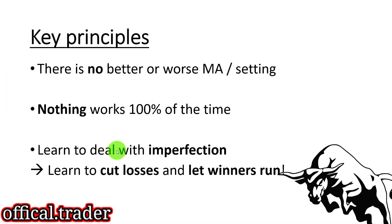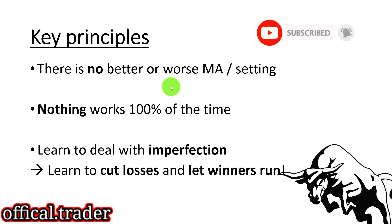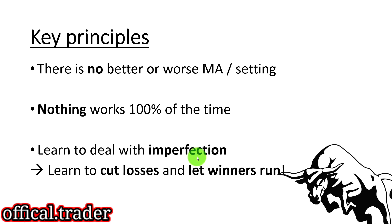The key principle for moving averages — and really for all tools and indicators — is that there is no better or worse MA or setting, and nothing works 100% of the time. There is no magic setting, no magic moving average, no magic time frame. If you still believe you must find the right moving average, the right setting, the right time frame, you are going to struggle forever as a trader. Learn to deal with imperfection. Don't try to find something that works 100% of the time — you will never find it.